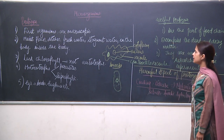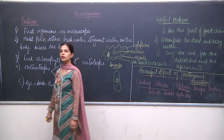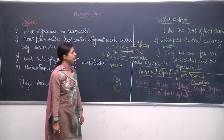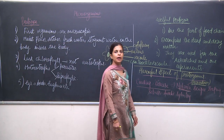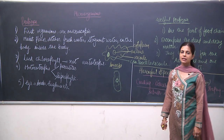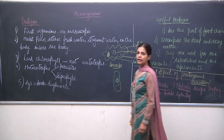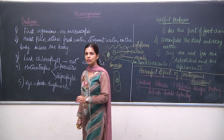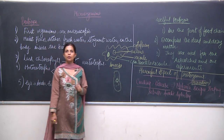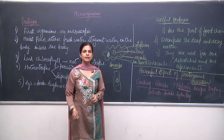So we have discussed protozoa — the useful aspects include their role in the food chain, decomposing sewage and dead matter, and their use in experiments and research. The harmful aspect is that they are responsible for causing various kinds of diseases. This was all about protozoans. Now we will move to the next part of the chapter, which is viruses.